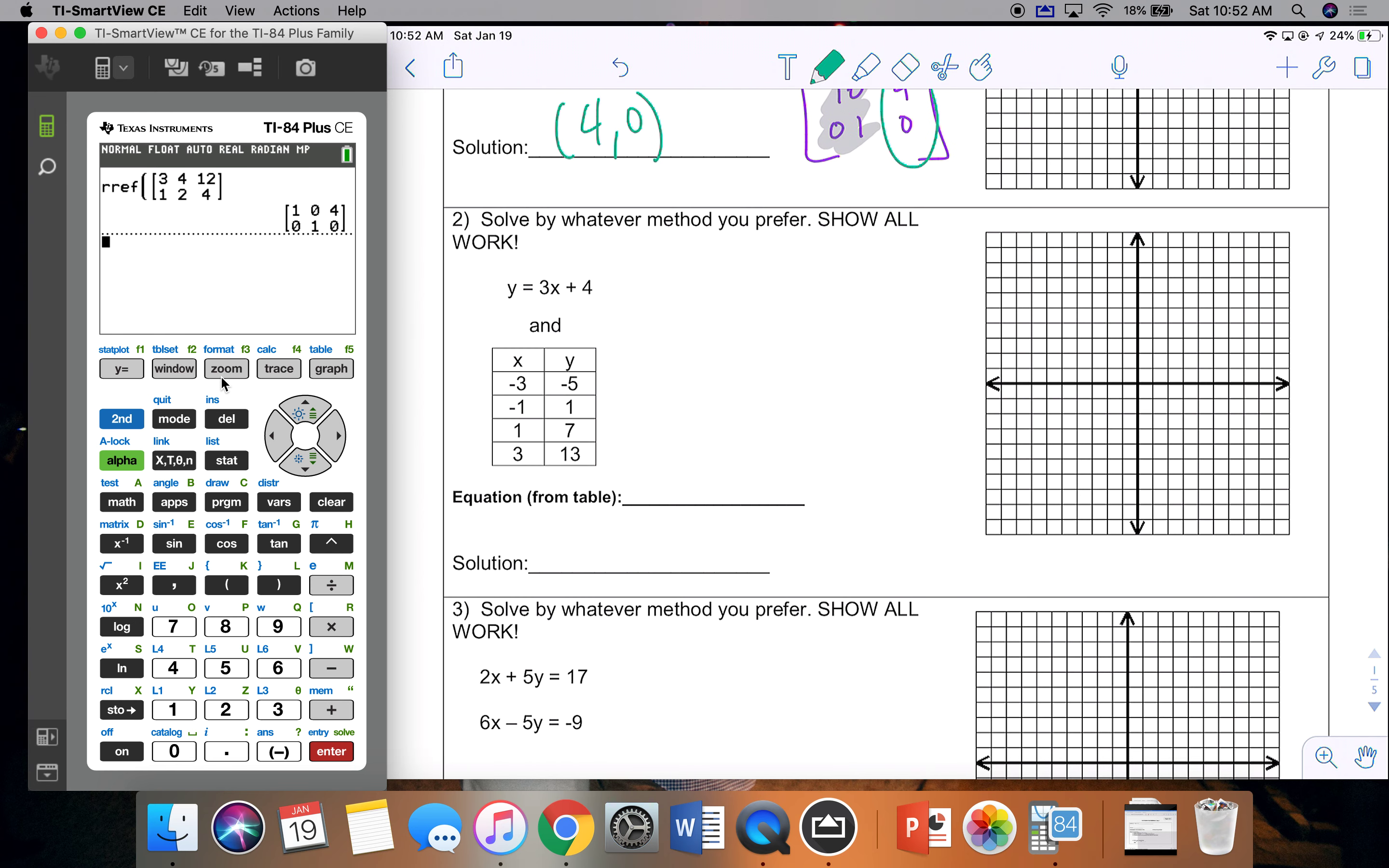Problem 2, I have an equation here and then I need to grab an equation from a table. So I go stat edit and I plug in the numbers like I see them. So I make the table in my calculator look exactly like the table on my paper. And then I click stat, scroll right to calc, option 4, enter, enter, enter. And the equation from my table is 3x + 4.